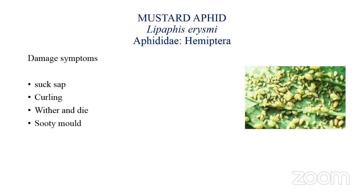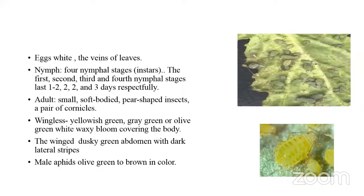The major pest of mustard is the mustard aphid. The scientific name is Lipaphis erysimi, belonging to family Aphididae. Both nymphs and adults suck sap from leaves, buds, and pods. Curling occurs in infested leaves. At advanced stage the plants wither and die. Sooty mould grows on the honeydew excreted by this insect. Plants remain stunted in severe conditions.